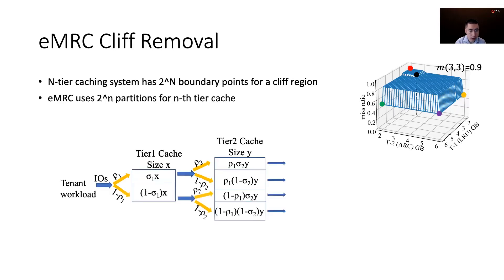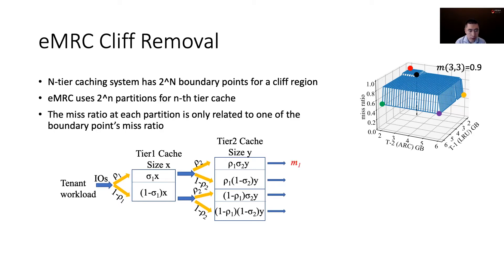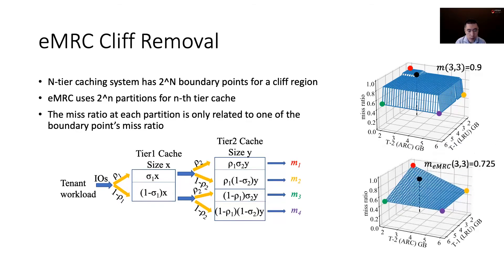In EMRC, we partition the nth-tier cache with 2^n partitions. For our two-tier system, the first tier has two partitions just like Talos. However, the second-tier cache now has four partitions. In EMRC, we carefully pick rhos and sigmas such that the miss ratio after each of the tier-2 partitions is only related to one of the boundary point miss ratios. For example, m1 is only related to the miss ratio at the red point, m2 is only related to the miss ratio at the yellow point, and so on. The partitioning parameters also allow us to transform the cliff region to a smooth region. Please check our paper for the proof and the math for n greater than 2.